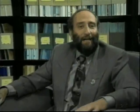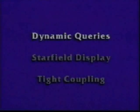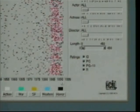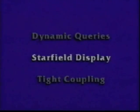These begin with the dynamic queries approach to filtering information by adjusting sliders, buttons, or other widgets to form a complex query. Second is the star field display, which takes two ordinary variables from the relational database and displays the entire set of records as multi-colored points of light.